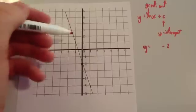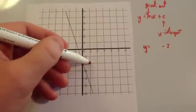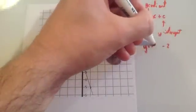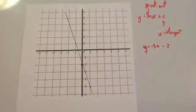And then, let's work out the gradient. So, if I choose a point, let's choose this point here. If I go across 1, I go down 1, 2, 3. So, the gradient is minus 3, so y equals minus 3x minus 2. That's the equation of this straight line graph.